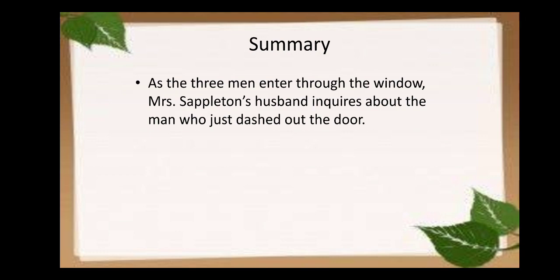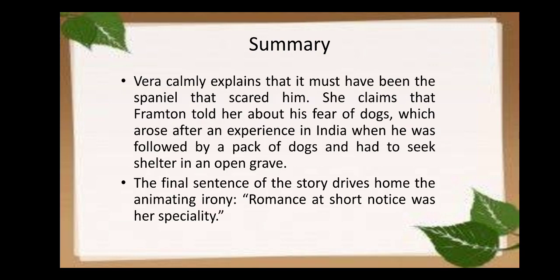As the three men enter through the window, Mrs. Sappleton's husband inquires about the man who just dashed out of the door. They are surprised that when they are entering the house, this man runs away. They do not know him — he is a new person. Mrs. Sappleton tells them about Frampton Nuttall, describing him as a most extraordinary man who spoke only of his diseases and sickness, and then suddenly left without explanation, as if he had seen a ghost.